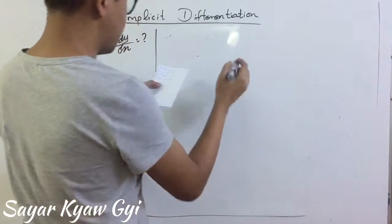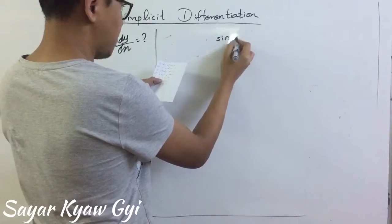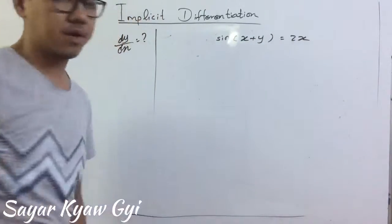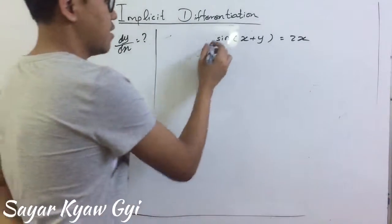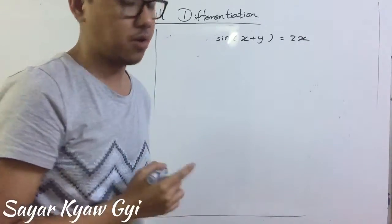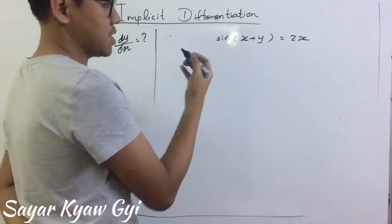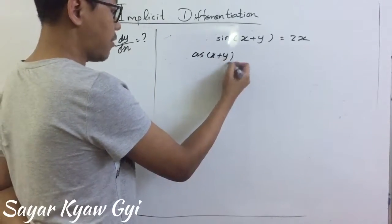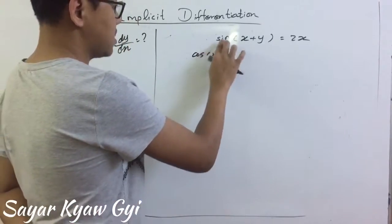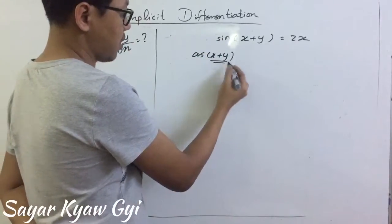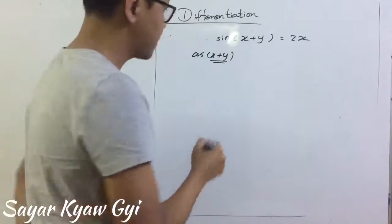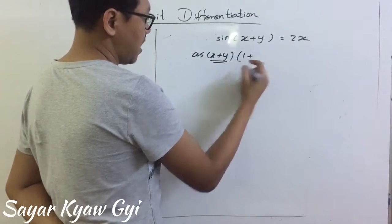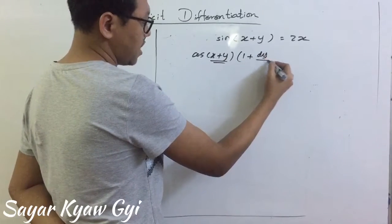The next example would be a trigonometry one: sine of (x plus y) equal to 2x. When you differentiate sine, we get cosine — the differentiation of sine is cosine. So, cosine of (x plus y). This time we are going to use the chain rule. First, we change sine to cosine, and then we differentiate again. When we differentiate x, we get 1, and when we differentiate y, we get dy by dx.